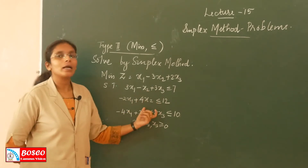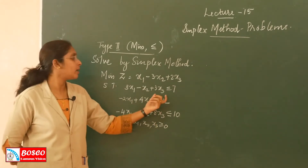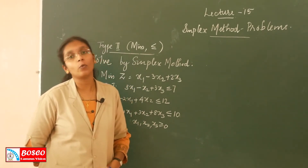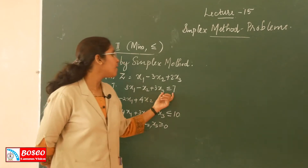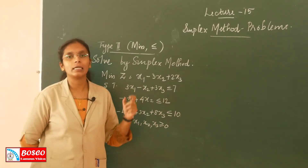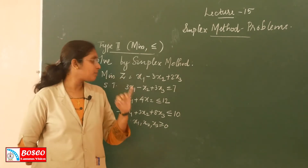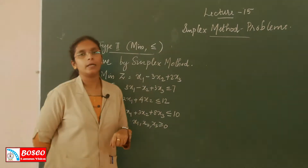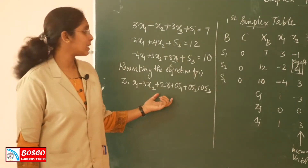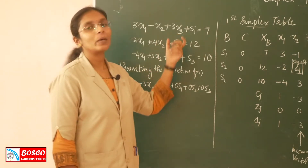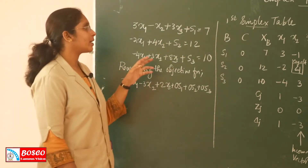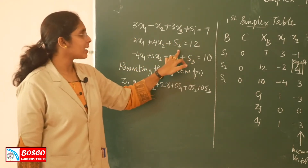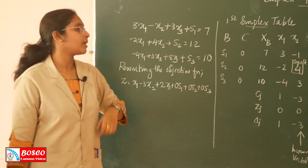Each constraint has a less than or equal to relationship. Therefore, we have to introduce slack variables. For the first constraint, second constraint, and third constraint — three slack variables S1, S2 and S3 are introduced. The inequality constraints are converted to equalities: the first constraint includes S1, the second constraint includes S2, and the third constraint includes S3.